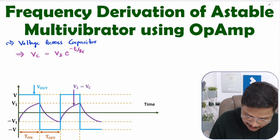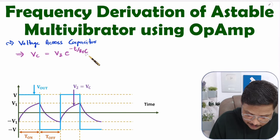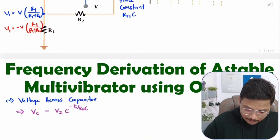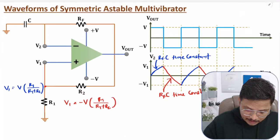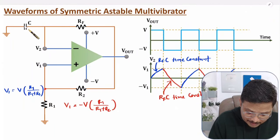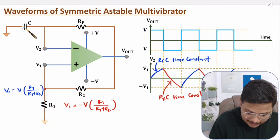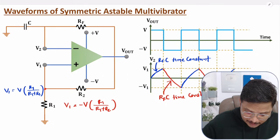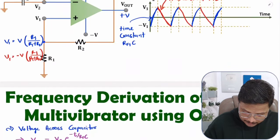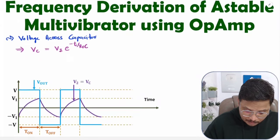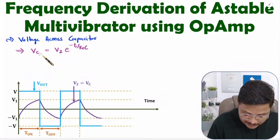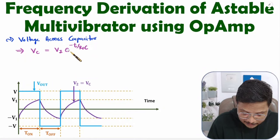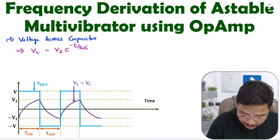Here, the time constant is Rf into C. If you observe the capacitor, it is charging via Rf and C, so the time constant is Rf into C. Therefore, voltage across capacitor Vc equals initial voltage into e to the power minus T divided by Rf into C.